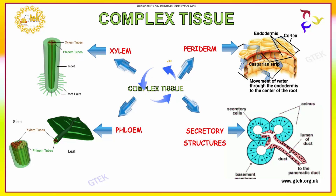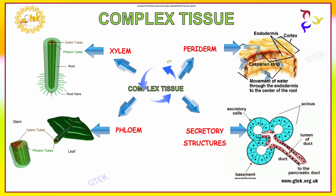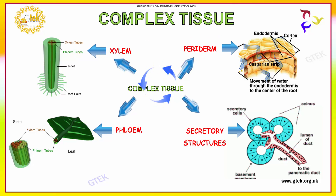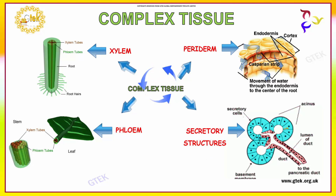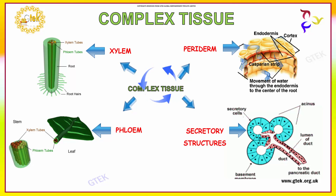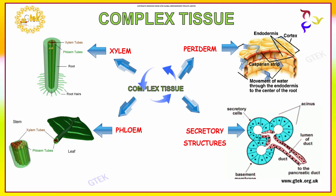Let us discuss about complex tissue. Complex tissue is divided into four types: xylem, periderm, phloem, and secretory structures. You can see the xylem here — it has xylem tubes, and the xylem tubes are covered by phloem tubes. You can see it here — this is the root.